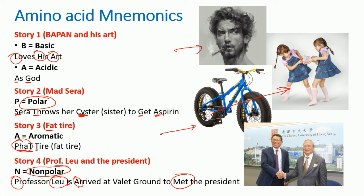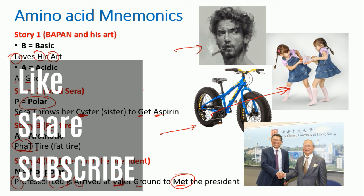Continuing story four: capital V is Valine (VAL), capital G is Glycine, and capital M is Methionine (MET). So all the non-polar amino acids are listed: Proline, Leucine, Alanine, Valine, Isoleucine, Glycine, and Methionine. If you remember these four stories, you can recall all the amino acid names and their chemical properties. If you like this video, please hit the like button, share it with your friends, and subscribe to the channel. Thank you.